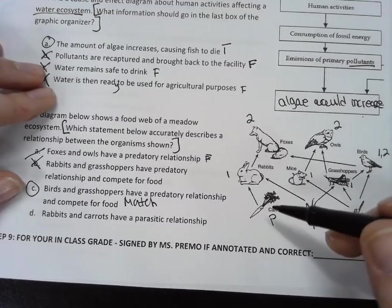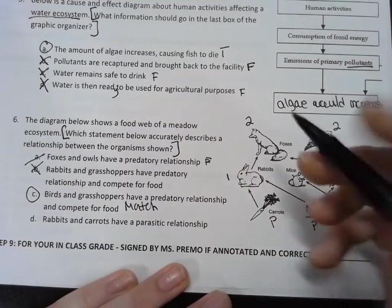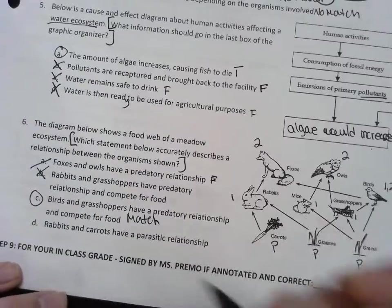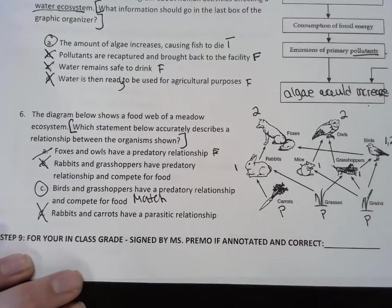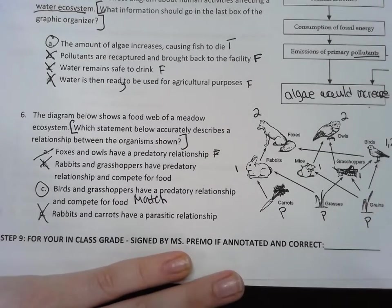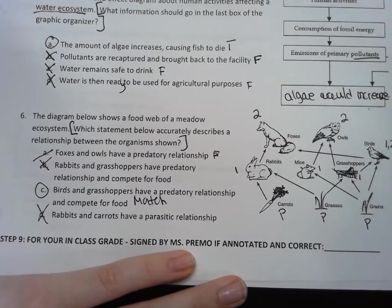And then rabbits and carrots have a parasitic relationship - well I can't really tell that. They could have a predatory relationship, but that's different from a parasitic relationship. Alright, so it's not a match. My correct answer is C. Alright, so that's it for our ecology breakdown.